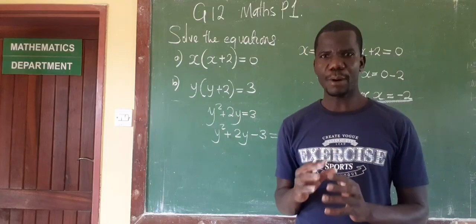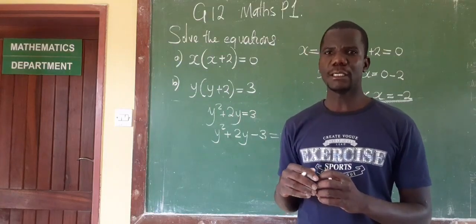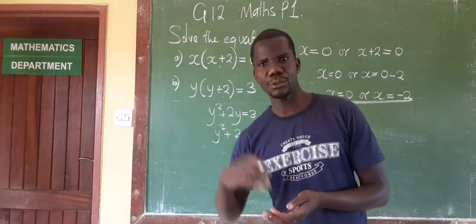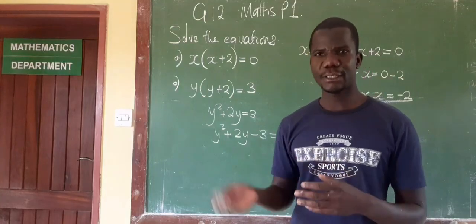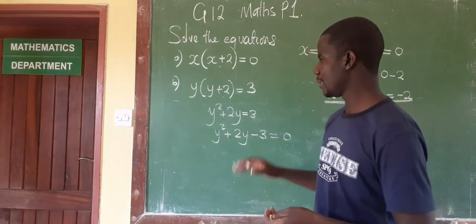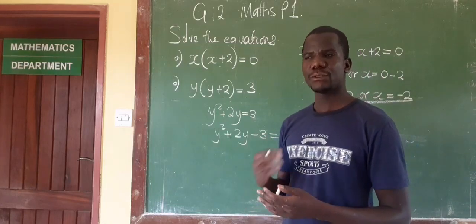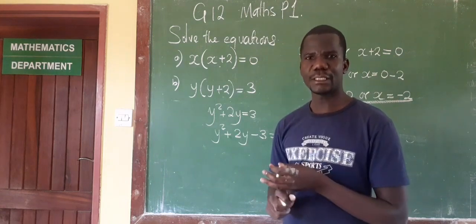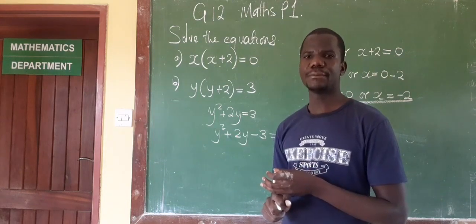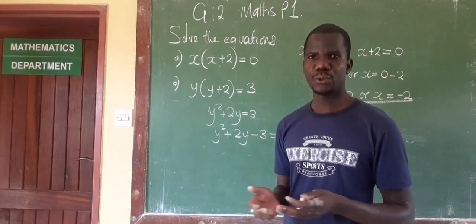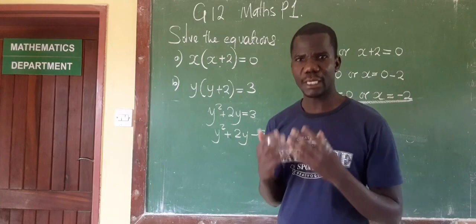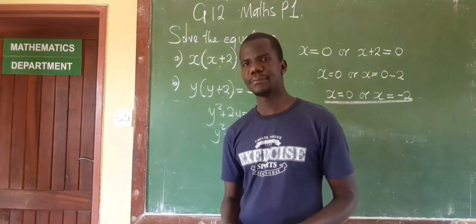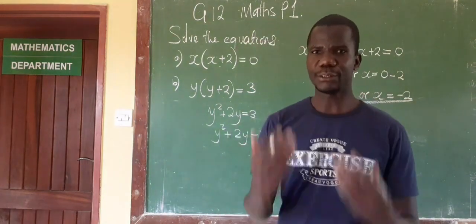Since this is Paper 1, there are several ways to solve a quadratic equation: factorization, the quadratic formula, completing the square, or the graphical method. In Paper 1, the most appropriate methods are factorization or completing the square, because these can be worked out without a calculator — and in Paper 1, use of a calculator is not allowed. So here we will use the factorization method.